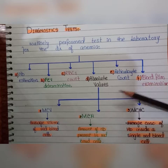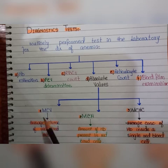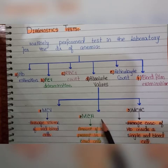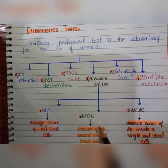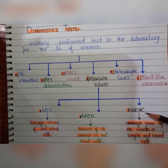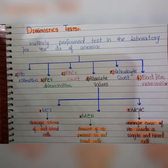The absolute values are: MCV or mean corpuscular volume, which is the average volume of red blood cells; MCH or mean corpuscular hemoglobin, which is the amount of hemoglobin present in red blood cells; and MCHC or mean cell hemoglobin concentration, which is the average concentration of hemoglobin inside a single red blood cell.